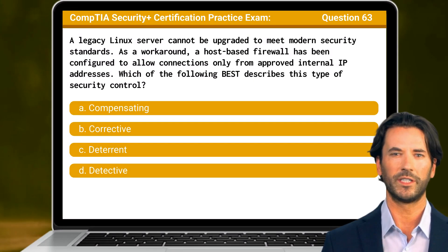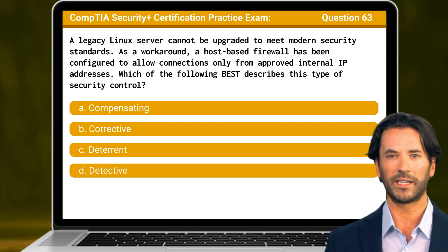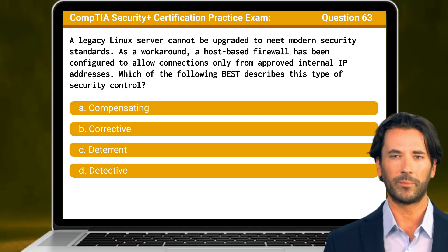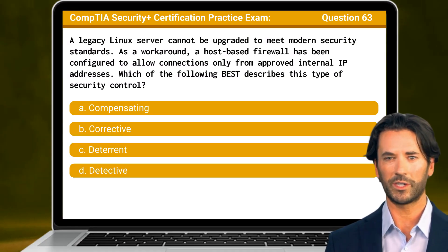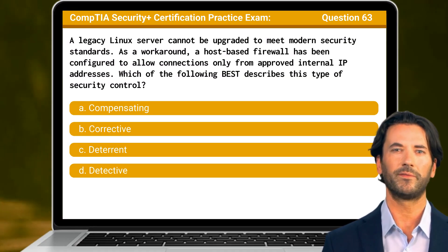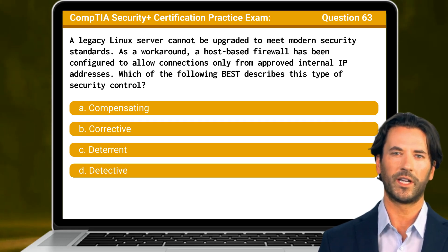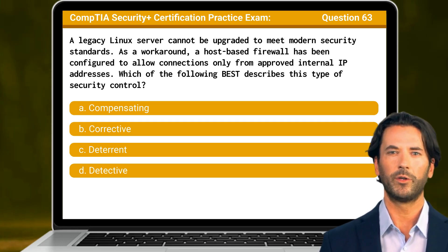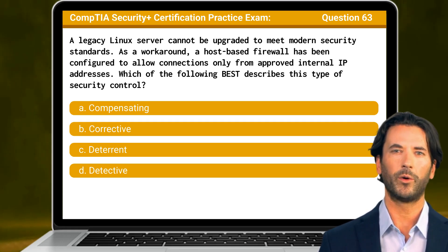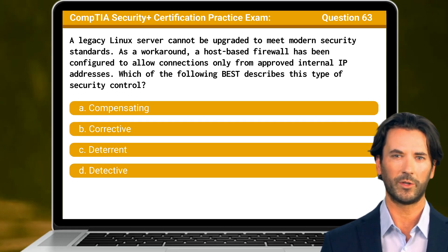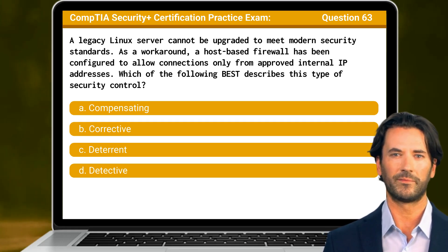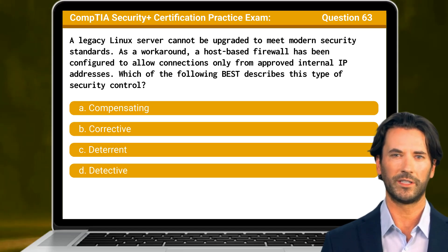Question 63. A legacy Linux server cannot be upgraded to meet modern security standards. As a workaround, a host-based firewall has been configured to allow connections only from approved internal IP addresses. Which of the following best describes this type of security control?